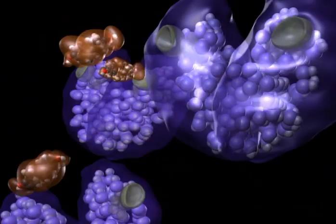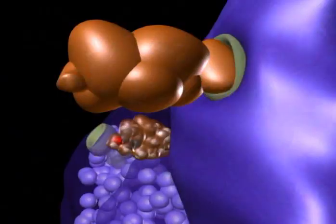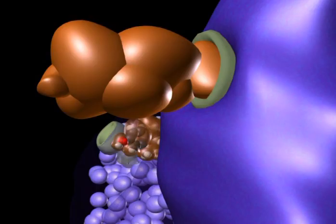Estradiol's shape allows it to fit into the specialized binding area on the estrogen receptor, similar to a lock and key. Once estradiol attaches to the estrogen receptor, the shape of the receptor actually changes.